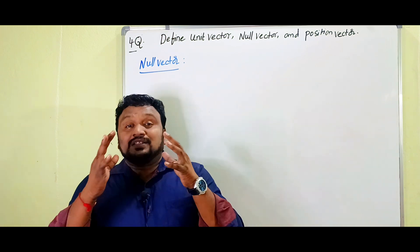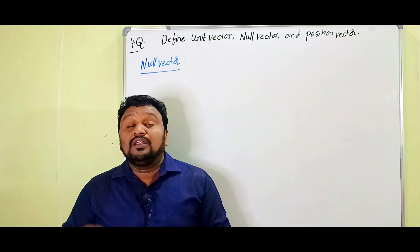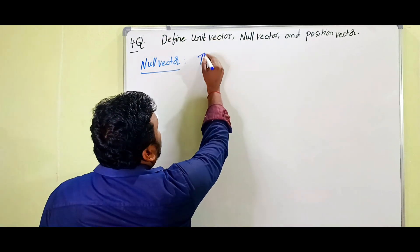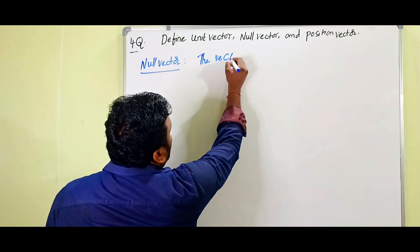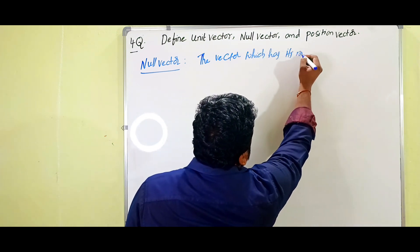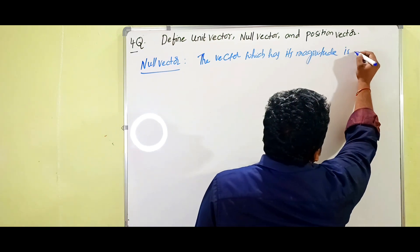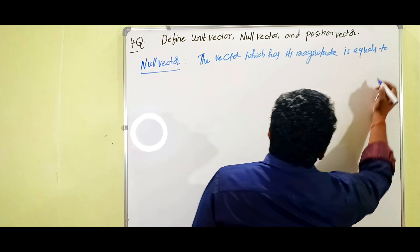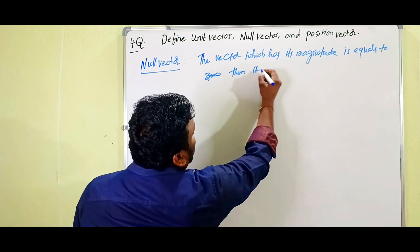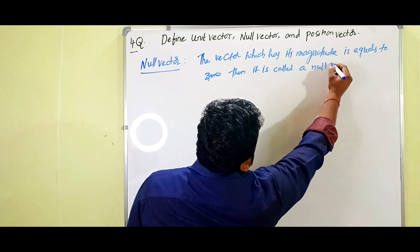A vector whose magnitude is equal to zero is called a null vector. The vector which has its magnitude equal to zero is called a null vector.